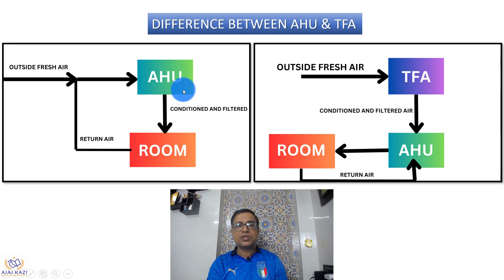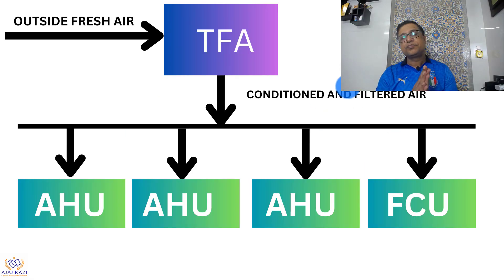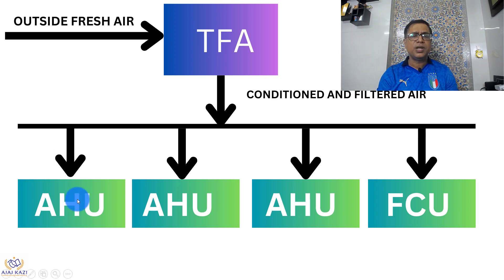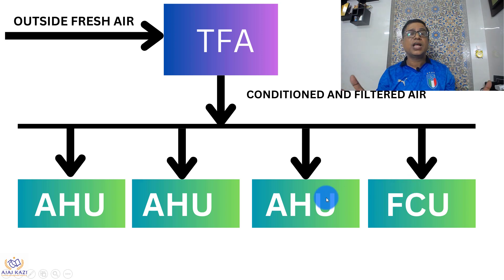You can see the AHU working, you can see the TFA working — half AHU working with the section, half TFA working with the section. Now this outside air which is treated by the TFA goes to multiple AHUs; it can go to AHUs, it can go to FCUs, and it can be supplied to multiple AHUs.